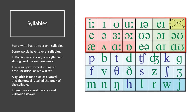Every word has at least one syllable. Some words have several syllables. In English words, only one syllable is strong and the rest are weak. This is very important in English pronunciation, as we will see. A syllable is made up of a vowel, and the vowel is called the peak of the syllable. Indeed, we cannot have a word without a vowel.